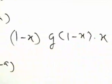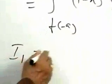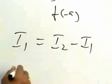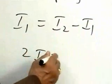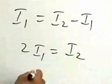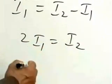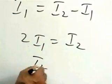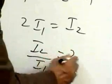Now break this into 2. Therefore, i1 is equal to i2 minus i1, or 2 i1 will be equal to i2. Therefore, i2 by i1 will be equal to 2.